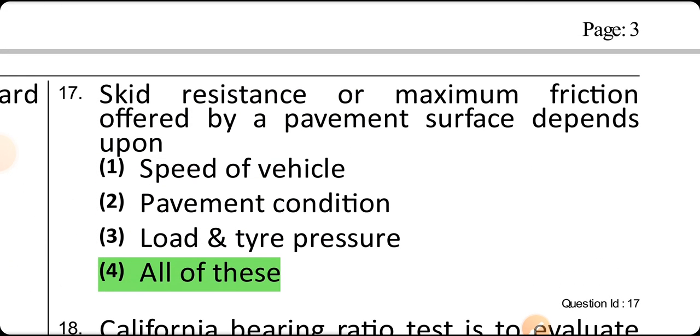Skid resistance or maximum friction offered by a pavement surface depends upon speed of the vehicle, pavement condition, load and tire pressure — all of the above.